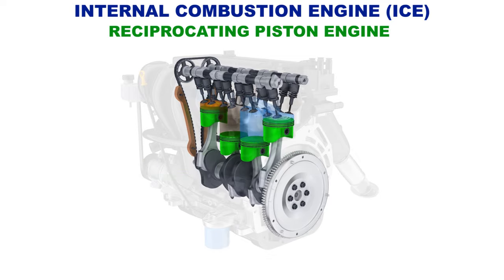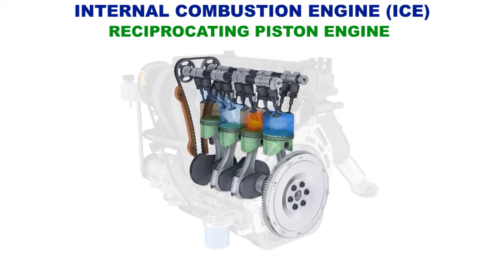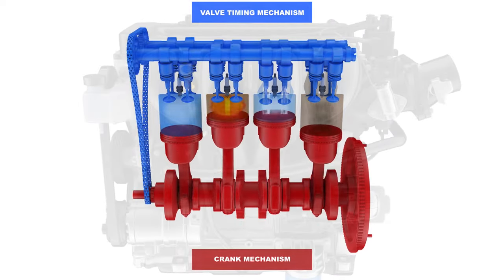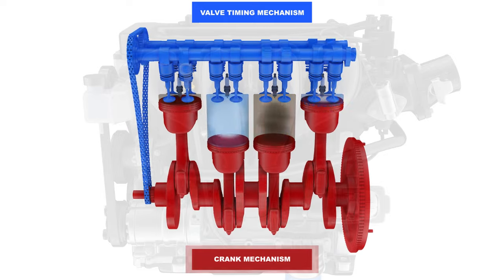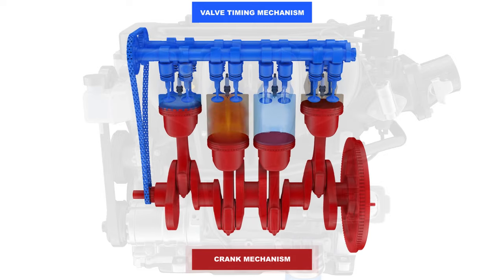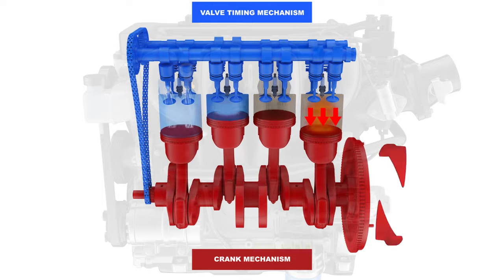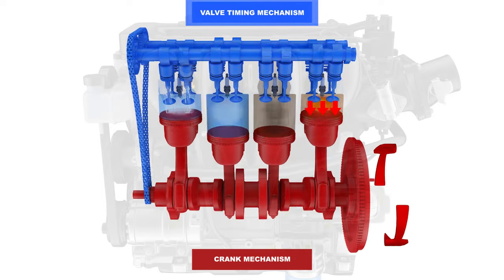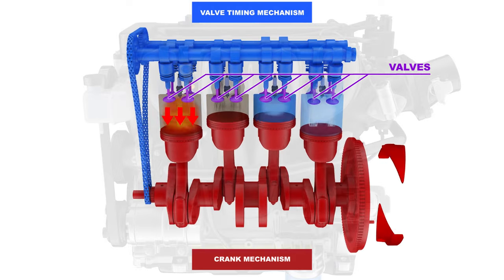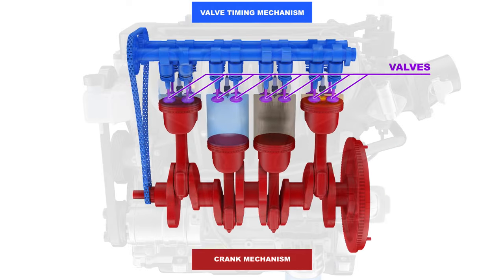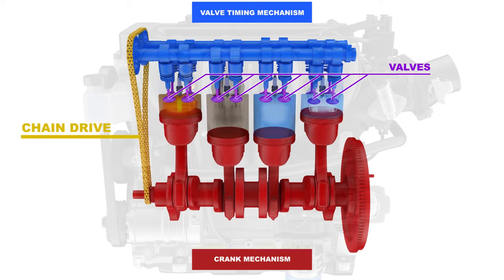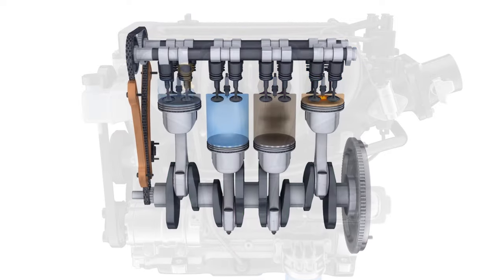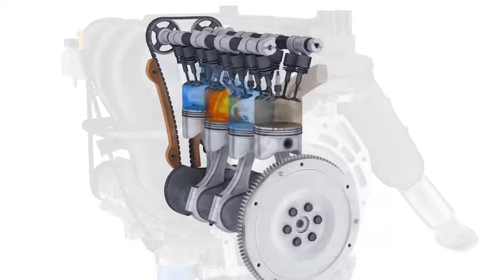Using the example of a four-stroke piston engine powered by gasoline, we can now see the crank mechanism and the valve timing mechanism. The former is propelled by the energy released during fuel combustion and converts such energy into rotational mechanical energy. The valve timing mechanism is needed to open the inlet and exhaust valves, and can be put in motion by gear, belt, or chain drive from the crankshaft.